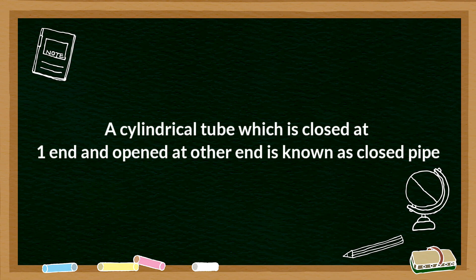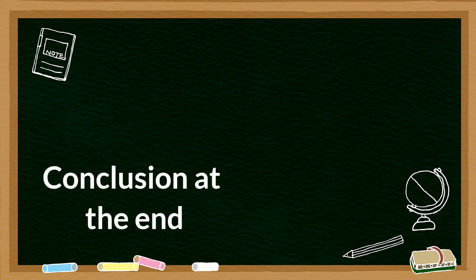Write that one line as introduction. Then start: 'When a sound wave is sent through...' and write the process step by step. At the same time, at the end of the answer add a conclusion statement. For the question 'How are stationary waves formed in closed pipes?' - after writing the entire answer, write: 'Hence, in this manner the stationary waves are formed in closed pipes.' Write one conclusion statement - the answer ending will be perfect.